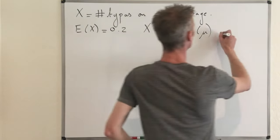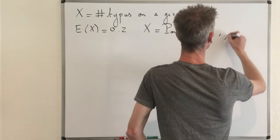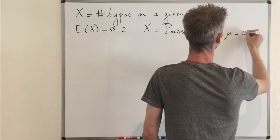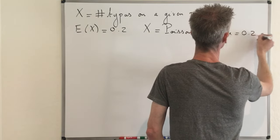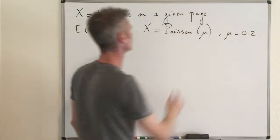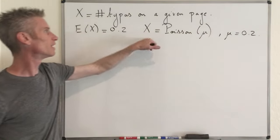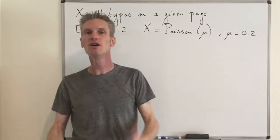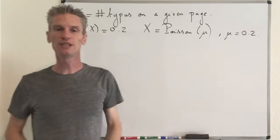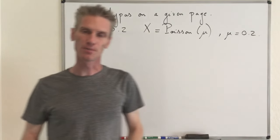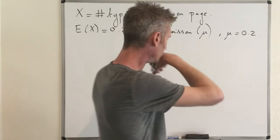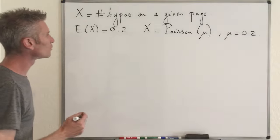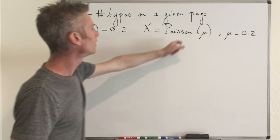I didn't prove that the expected value of X equals μ, so I'm going to do that in this video as well. There are two steps: first, why it makes sense to use the Poisson random variable, and second, computing the expected value.